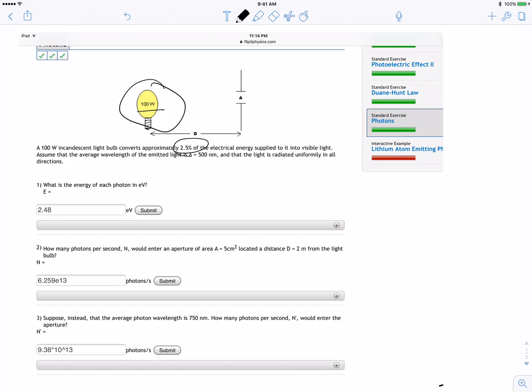So we have a bulb with 100 watts. Approximately 2.5% of the electric energy goes to visible light, and the lambda is 500 nanometers.